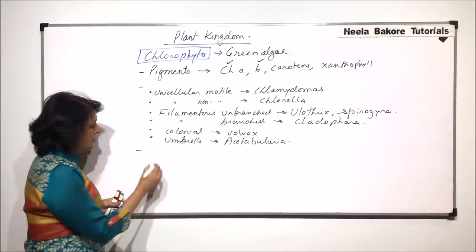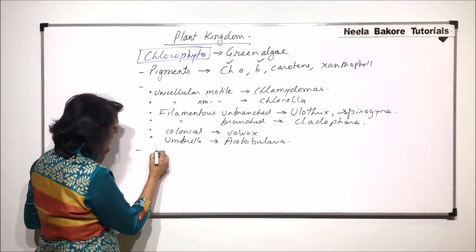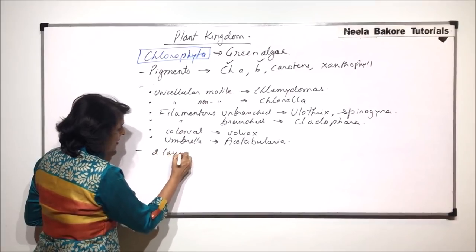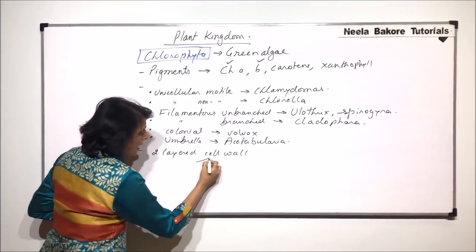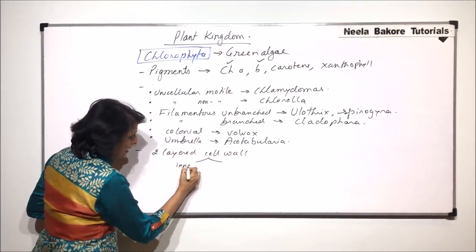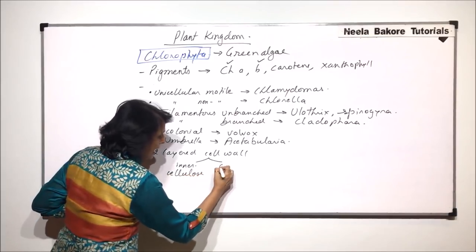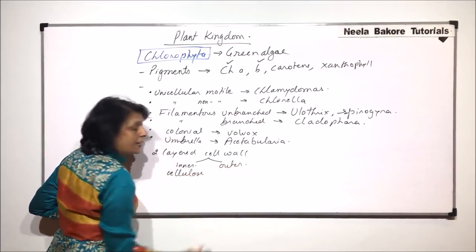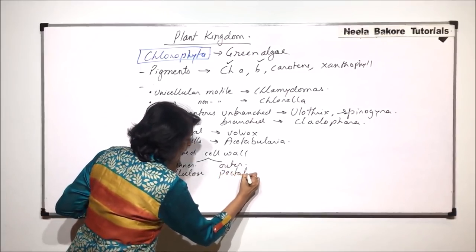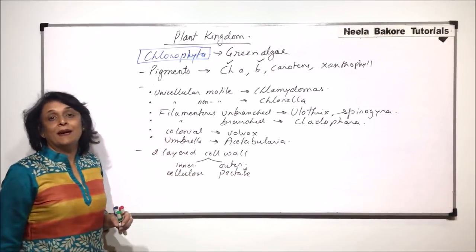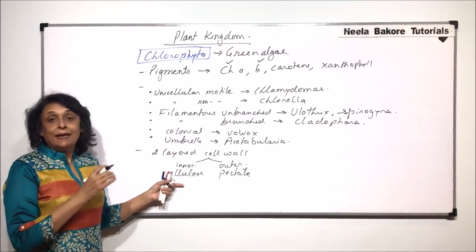The next general character found in all green algae is a two-layered cell wall. The inner layer is made up of cellulose and the outer is made up of pectate, or what we call pectic material. So the cell wall is mainly cellulose but has two layers — the inner pure cellulose layer and the outer pectic material.